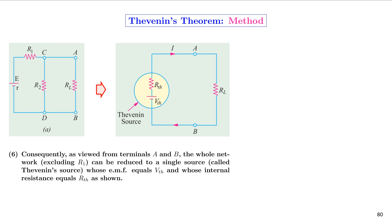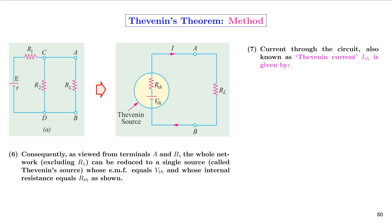Once we have Vth and Rth, we connect Rth in series with Vth to form the simplified circuit. We can then reconnect the load resistor RL. A current I flows through the circuit, denoted as Ith — the Thevenin current — which is equal to Vth divided by (Rth + RL), since Rth is in series with the load resistor RL.